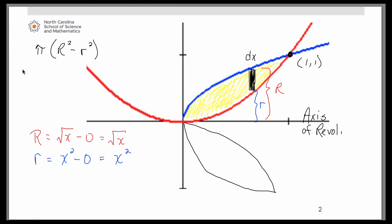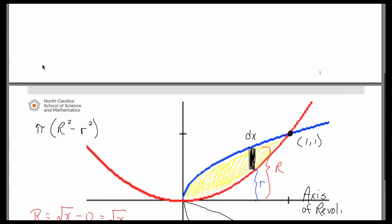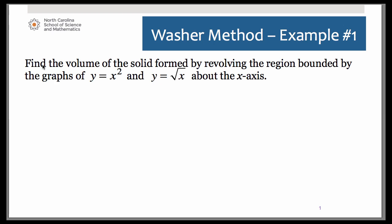So let's go back to the previous page and we'll get that set up. So our volume then is going to be the integral from 0 to 1 of pi. Now remember, we need big R, which was the square root of x. And we need to square that. So that's big R squared.